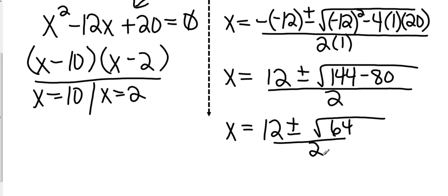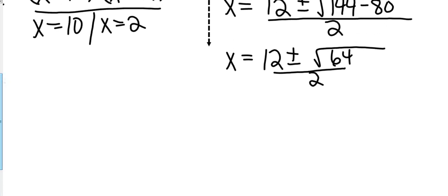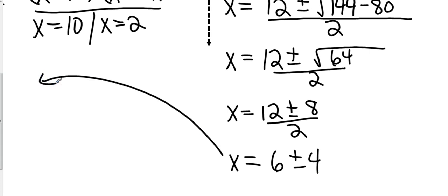We've got 12 plus or minus. 144 minus 80 is going to give me 64, all over 2. Now I still have to clean everything up. We know the square root of 64 is 8. So now we've got x equals 12 plus or minus 8 all over 2. That 2 can divide into everything up on the top. So it's going to be x equals 6 plus or minus 4.